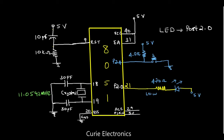Now, firstly we will see the circuit — what changes we are going to make from the previous video. In the previous video, we have seen how to interface a switch and LED with the 8051 microcontroller, specifically the 89C52. What I am going to use is External Hardware Interrupt Zero — that is pin number 12, which is P3.2, the INT0 pin. I will connect the switch to pin number 12.